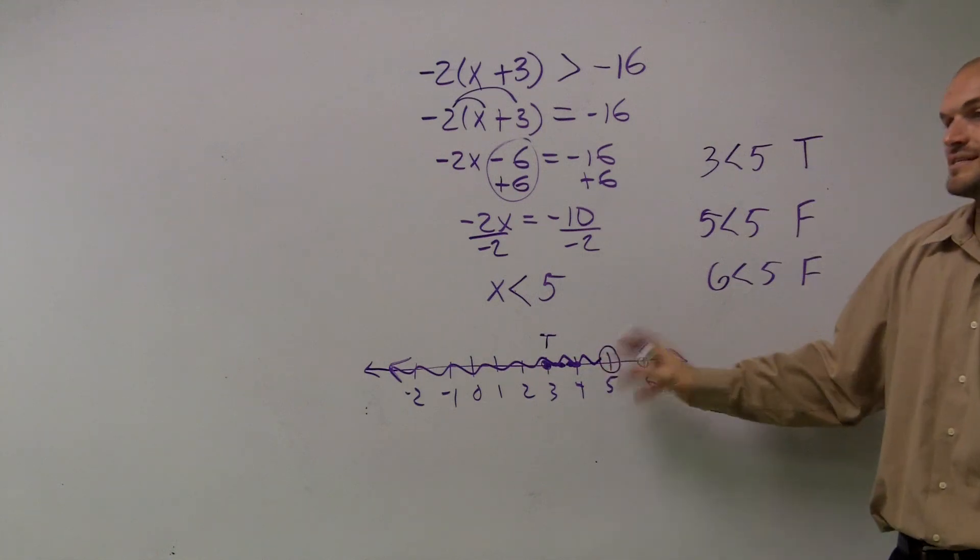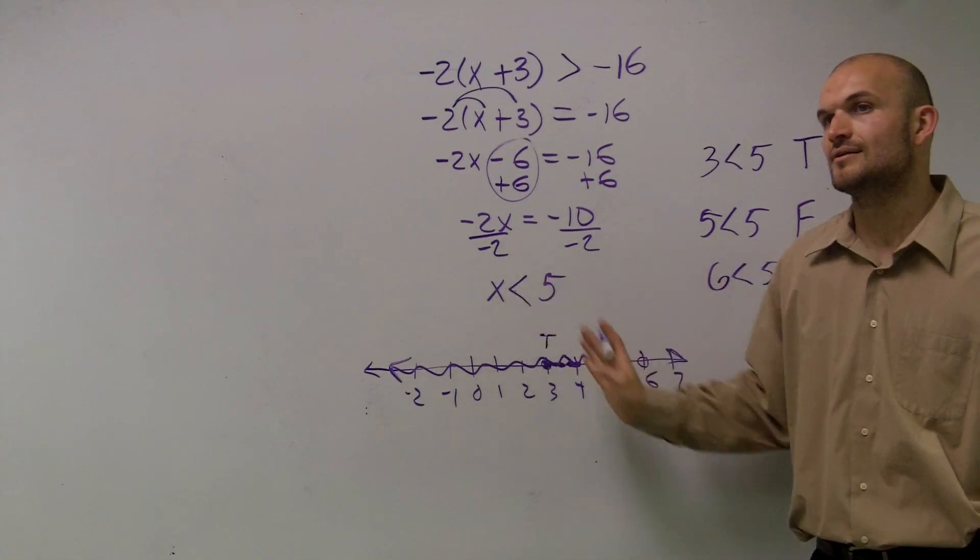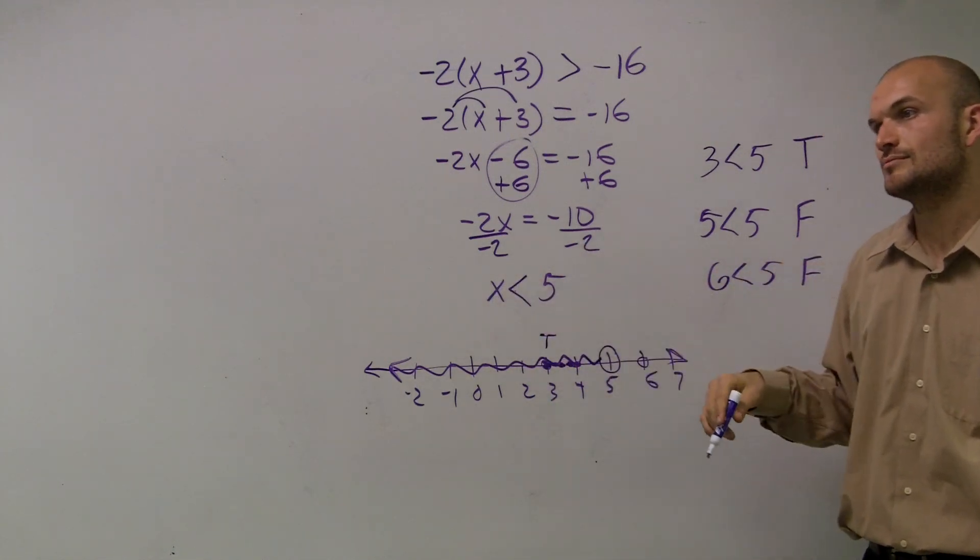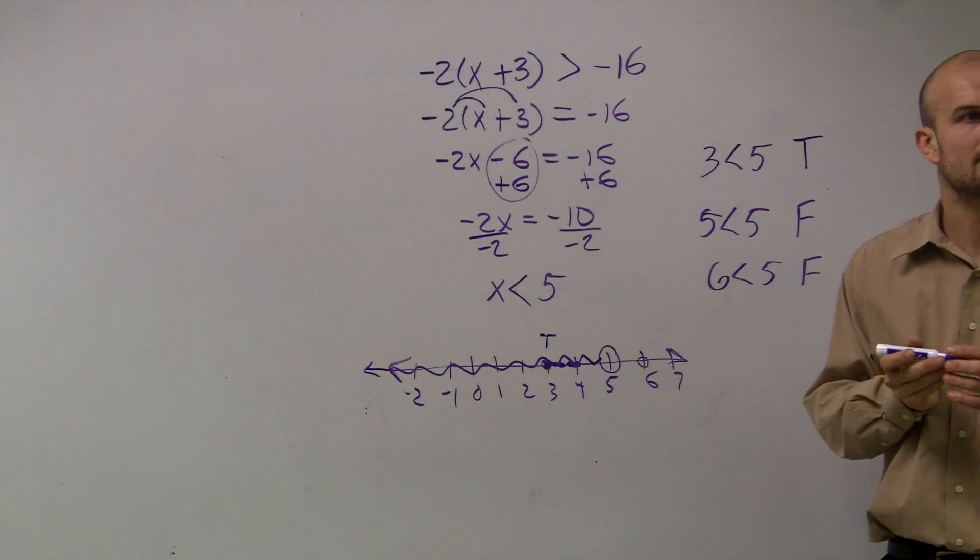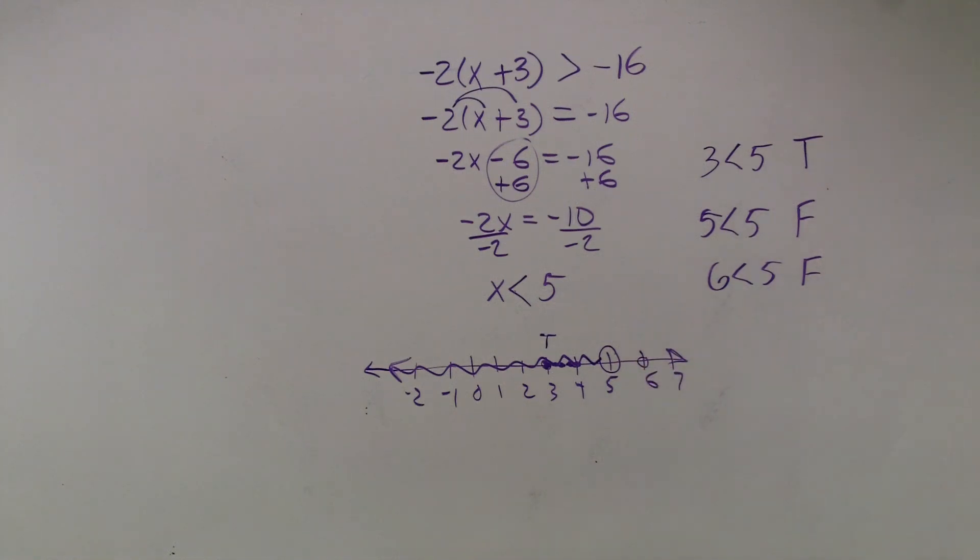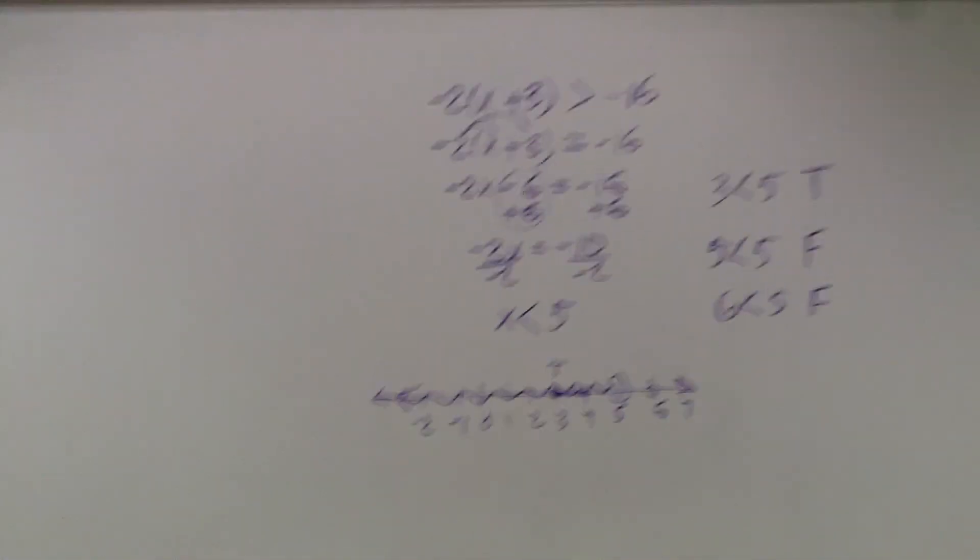This shows that all numbers less than 5 make the inequality true—except for 5 itself. Make sense? Alright, see you then.